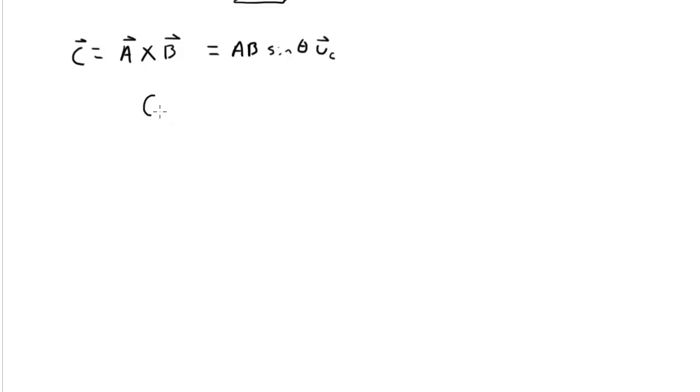It points in the direction that C points. So theta, C points normal to the plane defined by A and B.